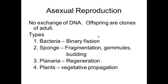Another form of asexual reproduction is regeneration, where a piece of the body gets broken off and the organism can regrow it. For example, a starfish can regrow an arm, and a planaria can regrow a head or other missing body parts.